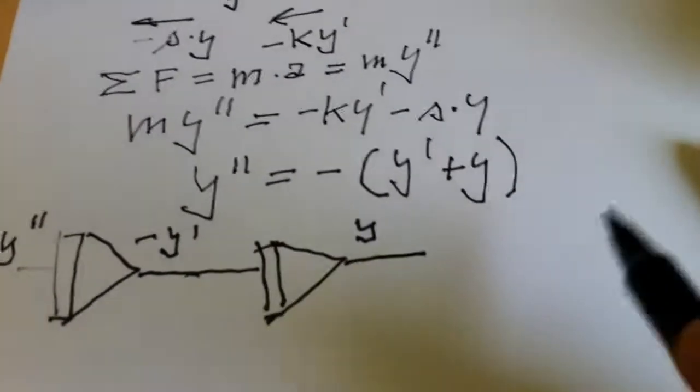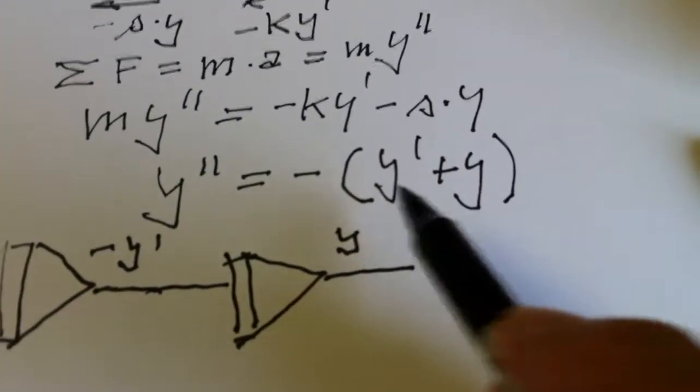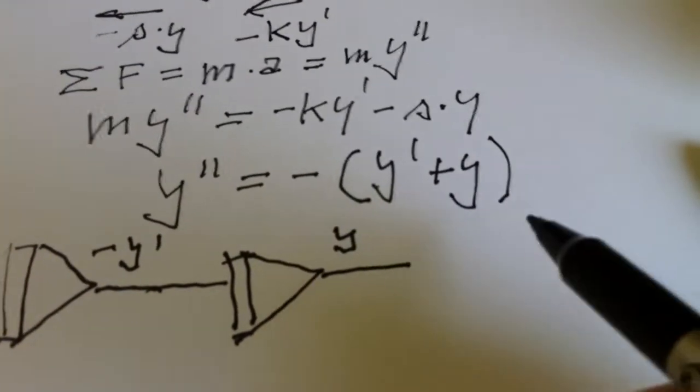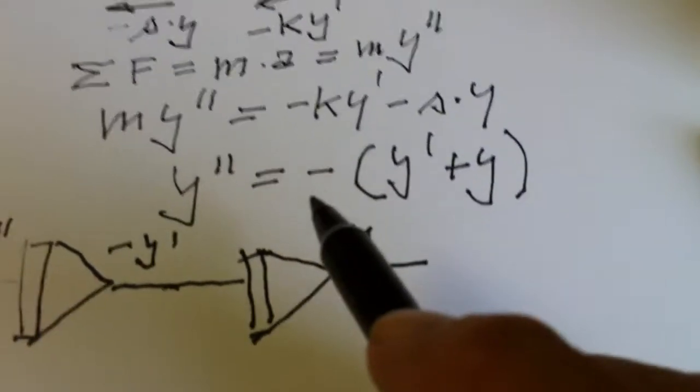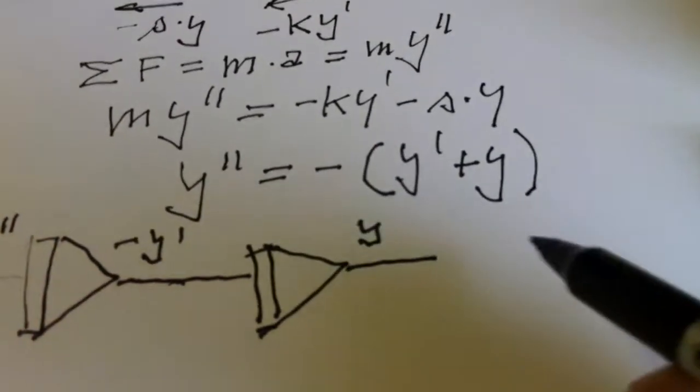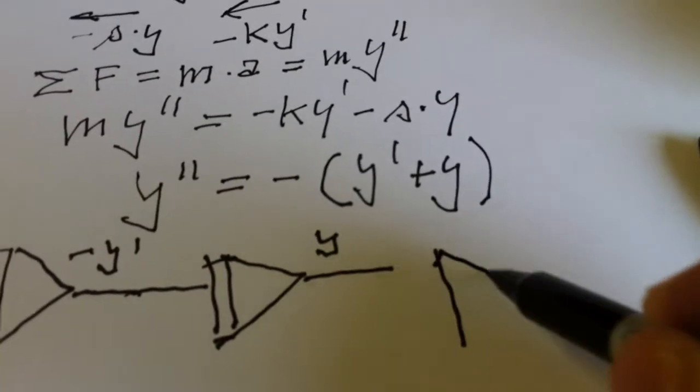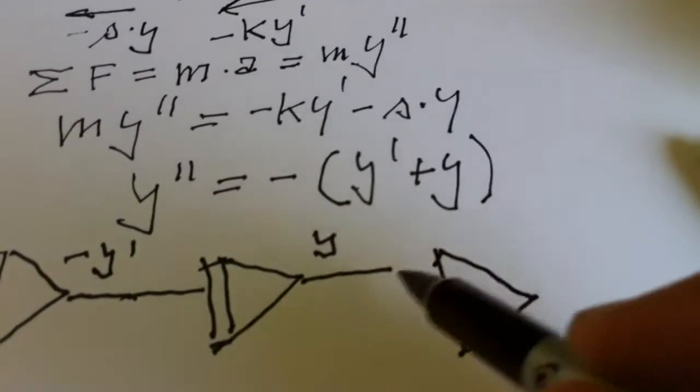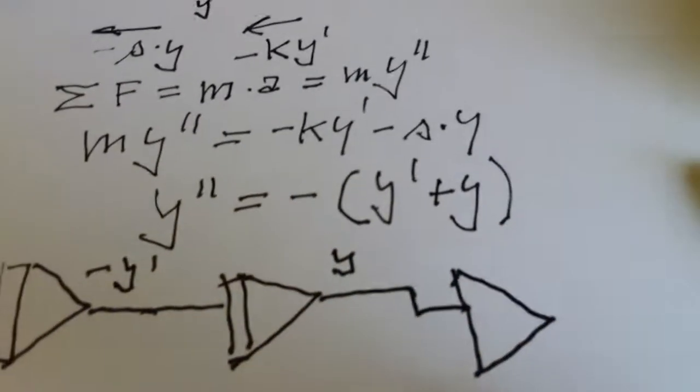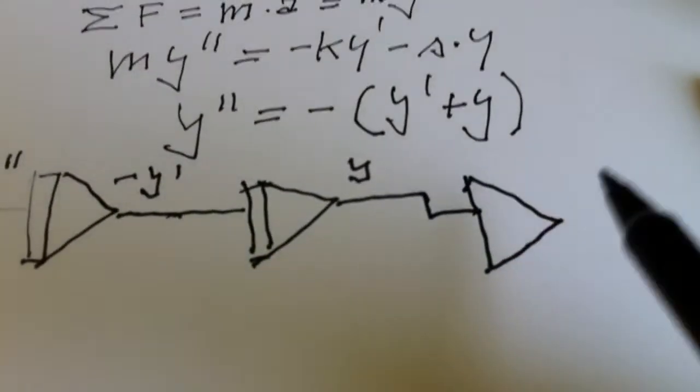Now, we have somehow to make an addition of these both terms, actually of the opposite of these terms. So, I will take an adder and remember that an adder will change always a sign. And we route the Y into the adder.